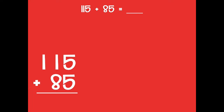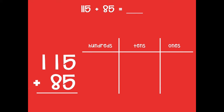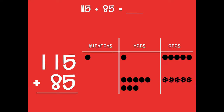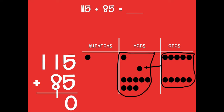I wrote it vertically and modeled the numbers: 115 is one hundred, one ten, and five ones; 85 is eight tens and five ones. In the ones place, five plus five makes ten, so I compose one new ten with zero ones left over. In the tens place, I count up to ten tens — eight, nine, ten — so I compose those into a new hundred, leaving zero tens. Now counting my hundreds: two hundreds. So 115 plus 85 equals 200.